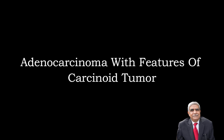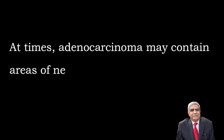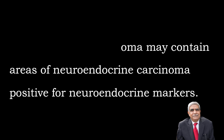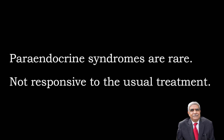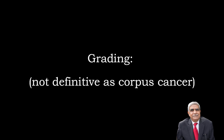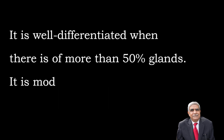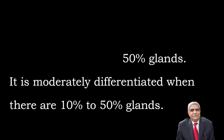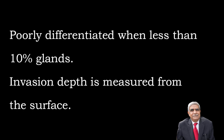Adenocarcinoma with features of carcinoid tumor: occasionally, an adenocarcinoma of the cervix may contain areas of endocrine carcinoma which are positive for neuroendocrine markers. Paraneoplastic endocrine syndromes are rare. These tumors are not responsive to usual treatment. Grading of adenocarcinoma of the cervix: well differentiated when more than 50% of glands are appreciated; moderately differentiated when 50% of glands are present; poorly differentiated when less than 10% of glands are recognized. Depth of invasion is measured from the cervix.